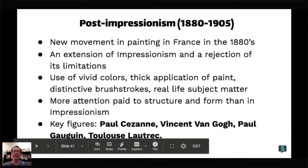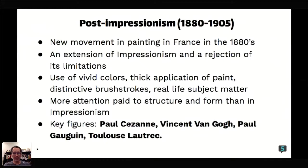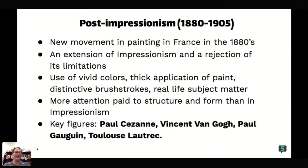That's basically Impressionism — let's move on to Post-Impressionism. Post-Impressionism starts around the 1880s with people getting tired of Impressionism. It's kind of an extension of Impressionism — they also used vivid colors, thick application of paint, and distinctive brushstrokes. They moved from more real-life subjects and paid more attention to detail and structure than the Impressionists did. Famous painters from Post-Impressionism include Cézanne, Vincent van Gogh, Paul Gauguin, and Toulouse-Lautrec.